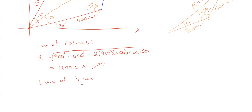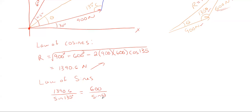Utilizing the law of sines: my resultant side, which is 1390.6, over the sine of the angle opposite it — which is 135 degrees — equals the side opposite the angle I'm looking for. The 600 Newtons is opposite the theta angle, so it's 600 divided by the sine of theta. Solving for theta by rearranging and cross-multiplying: theta equals the sine inverse of 600 times sine of 135 degrees, divided by 1390.6. This gives a total of 17.76 degrees.